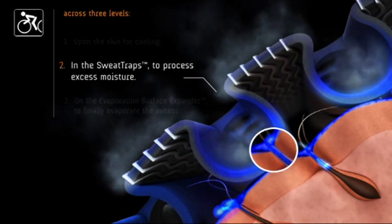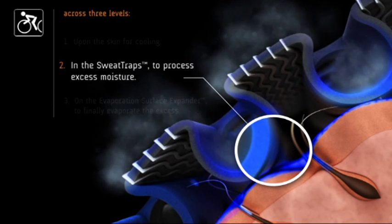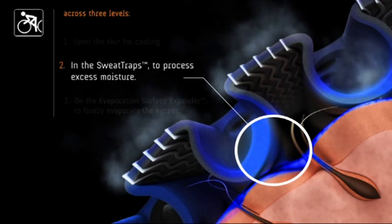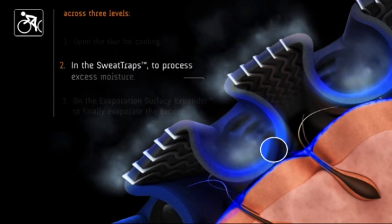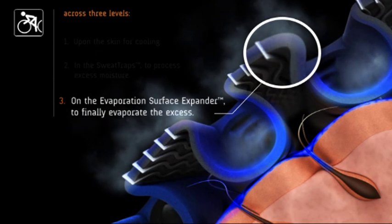In the sweat traps to process excess moisture, and on the evaporation surface expander to finally evaporate any excess.